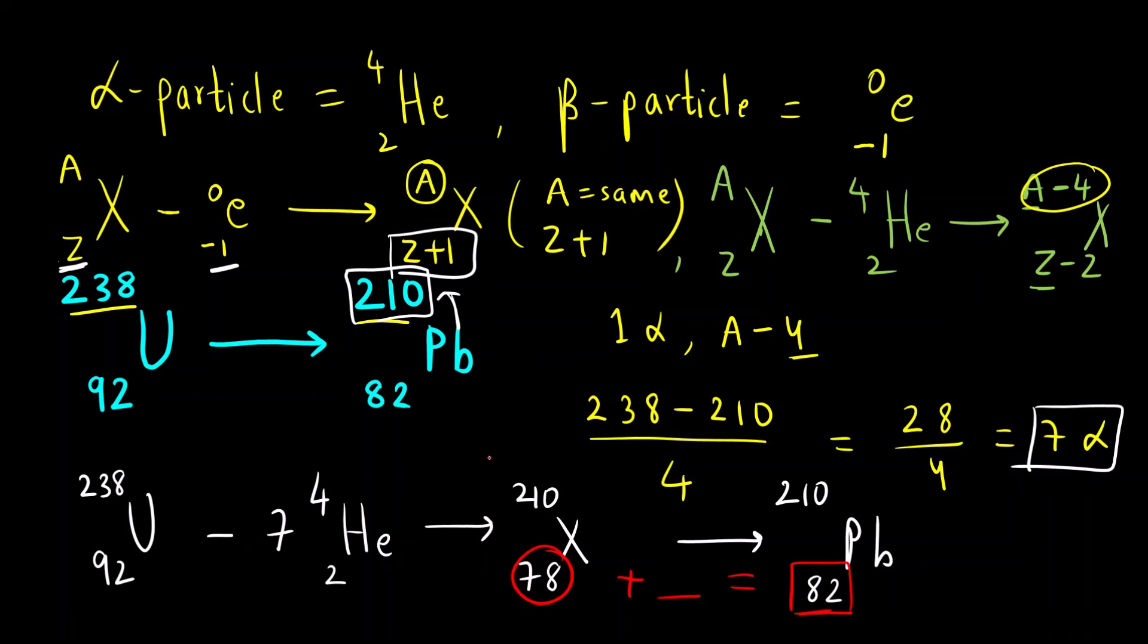You can see 78 plus how much will give me 82? That will be the number of beta particles. For 1 beta particle, the atomic number is increased by 1 unit. Here it is increased by 4 units, so there are 4 beta particles. 7 alpha and 4 beta.